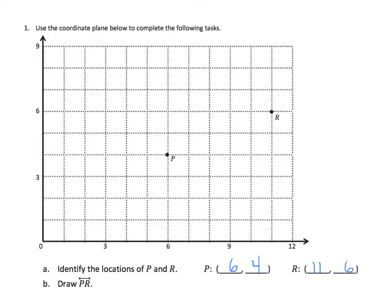Now we need to draw PR using our straight edge. We now have our line PR. We should put a couple of arrows on there, because they ask us to have a line that's indicated by the line with the two arrowheads over the pair PR.